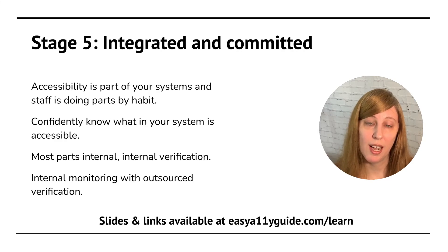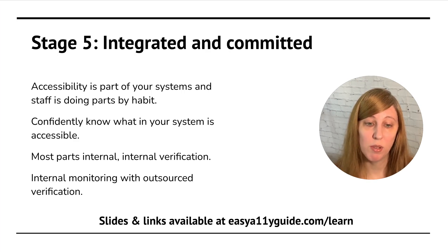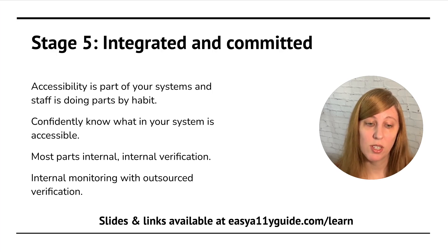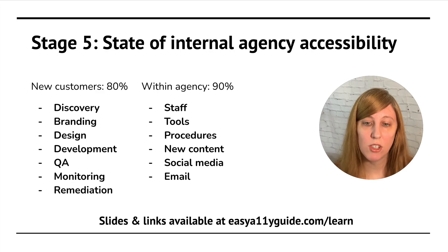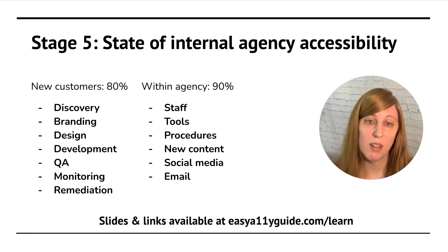In stage five, you have accessibility as part of your systems. Your staff is just doing it by habit — it is ingrained into them as part of what they do every day. You are confident that your system is producing accessible outputs and you have most of it internal, including internal verification. Occasionally, you have some outsourced verification on your internal monitoring just to check in and make sure everything is going as expected. You are incorporating it into all of your processes, into all the phases of your project, and fulfilling a lot of that in-house with just a little bit of external verification.